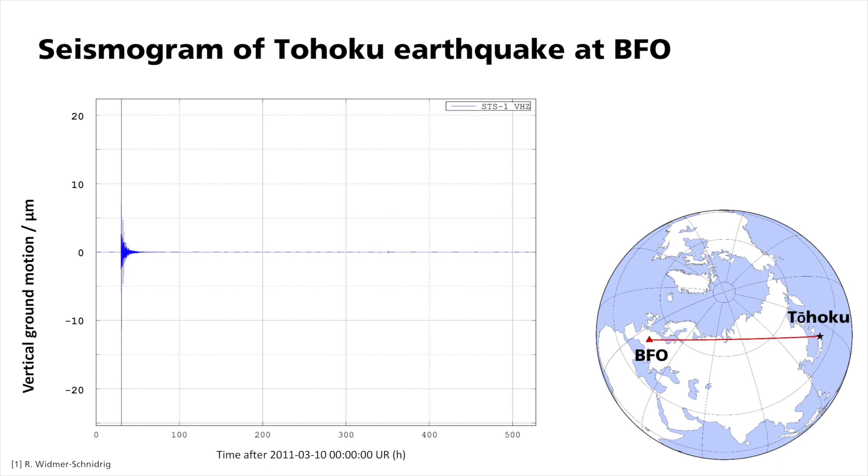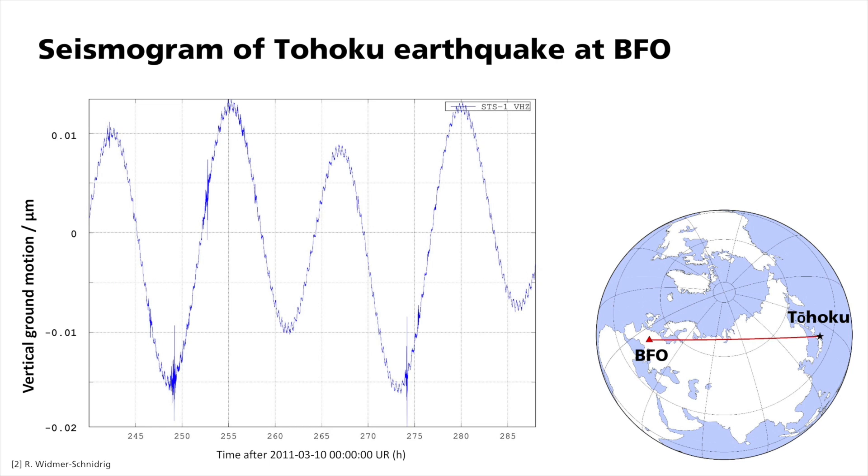On the illustration, you can see the vertical ground motion plotted over time in hours as it was recorded at the Seismic Black Forest Observatory. The stronger seismic waves last for up to ten hours after the quake. If we zoom into the seismogram ten days after the quake, the first thing we see are the major earth tides with a 12-hour period.